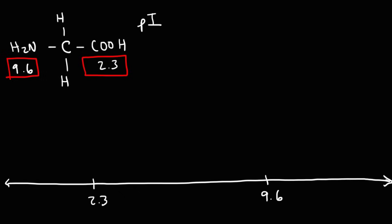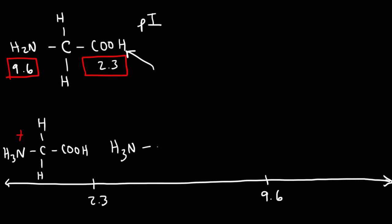At a pH less than 2.3, the amino acid will be fully protonated. The amino group will have a positive charge, and the carboxylic acid group is already protonated — so this is the dominant form at a pH less than 2.3. When the pH goes past 2.3, the carboxylic acid functional group will lose the hydrogen. The nitrogen will still have a positive charge, but the oxygen of the carboxylic acid functional group now has a negative charge.